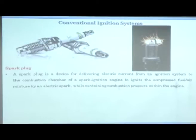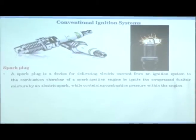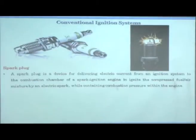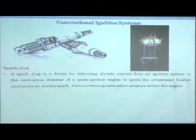In spark ignition systems, the spark plug is the device for delivering electrical current from an ignition source to the combustion chamber. As you can see, there are two electrodes and a ceramic insulator. These two electrodes are separated by a very high quality insulator — alumina.